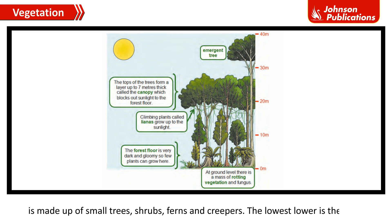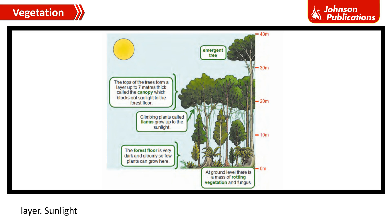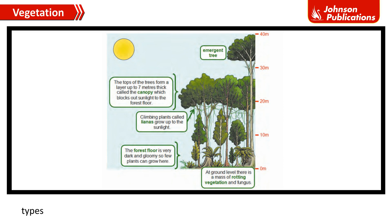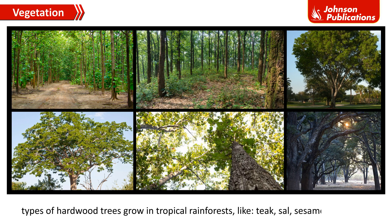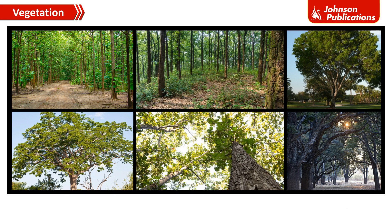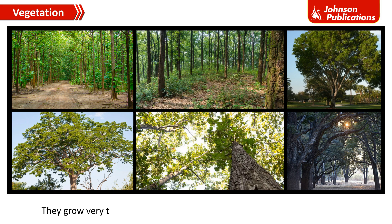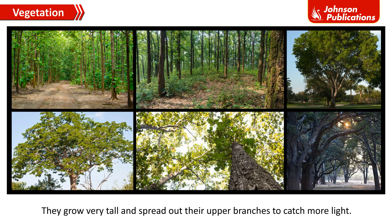The lowest layer is the forest floor layer. Sunlight doesn't reach here; it is made up of fallen and decayed leaves. Hundreds of types of hardwood trees grow in tropical rainforests, like teak, sal, sesim, mahogany, rosewood, and ebony. Rainforests are so dense that the trees have to fight for sunlight, growing very tall and spreading out their upper branches to catch more light.